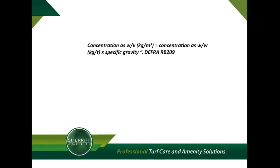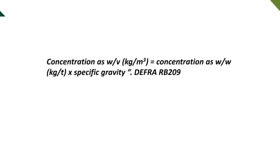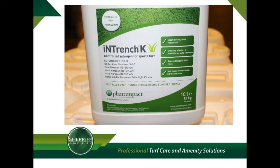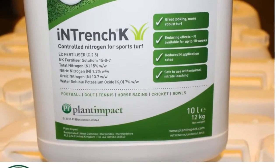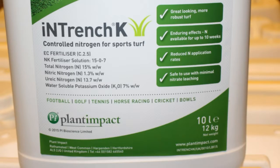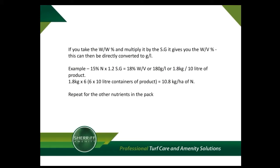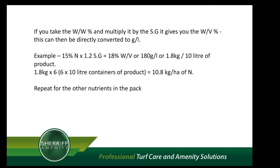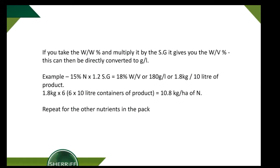For example, Entrenched K is stated as NPK 15-0-7, weight by weight, and the specific gravity is 1.2. If you take the weight by weight percentage and multiply it by the specific gravity, it will give you the weight by volume percentage, which can then be directly converted into grams per liter. In our example, Entrenched K's 15% nitrogen times 1.2 specific gravity equals 18% weight by volume, or 180 grams per liter, or 1.8 kilograms per 10 liters of product.